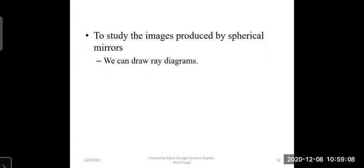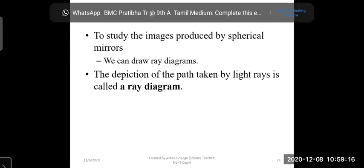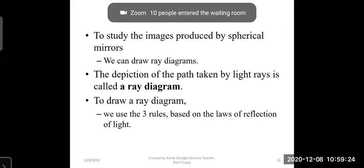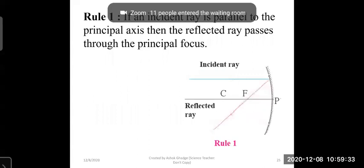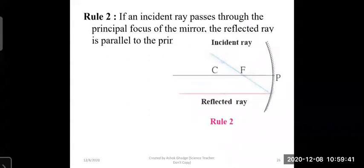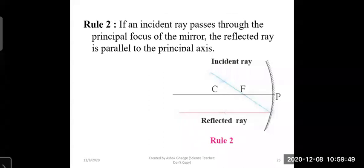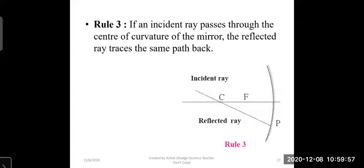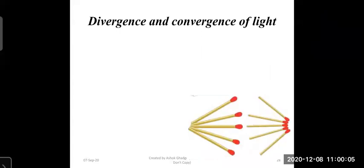To study images formed by spherical mirrors, we draw ray diagrams. A ray diagram is a depiction of the path taken by light rays. To draw a ray diagram, we follow three rules based on the laws of reflection. Rule 1: An incident ray parallel to the principal axis reflects through the principal focus. Rule 2: An incident ray passing through the principal focus reflects parallel to the principal axis. Rule 3: An incident ray passing through the center of curvature reflects back along the same path.